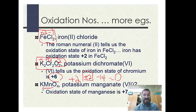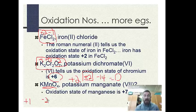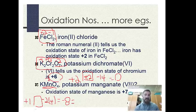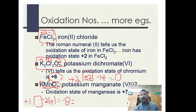In potassium permanganate (KMnO₄), oxygen is minus two; four oxygens give minus eight. Potassium is plus one. So plus one from potassium plus the value for manganese plus minus eight must equal zero. That means manganese must be plus seven. Manganese's oxidation number is positive seven.